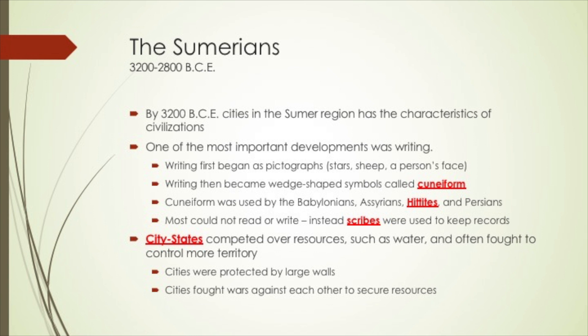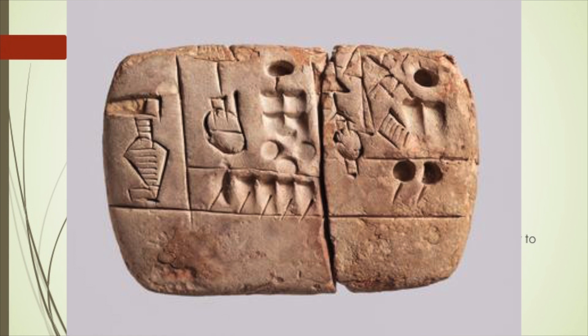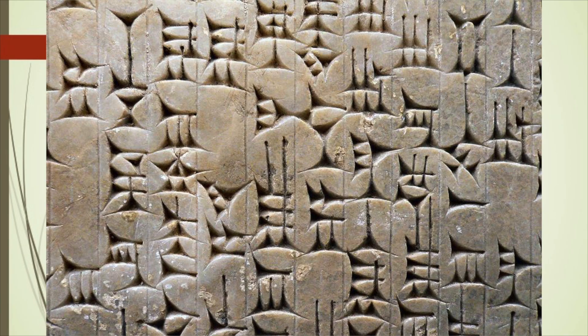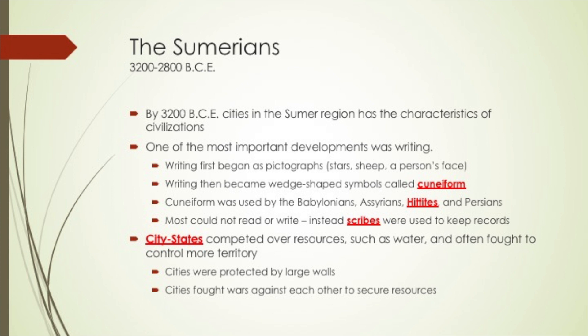One of the most important parts of Sumerian civilization was the development of writing. Writing first began as pictographs — pictures of stars, sheep, or a person's face — but they eventually evolved into symbols. The writing in this area was called cuneiform, from the Latin word 'cunus,' meaning wedge-shaped. It was a series of wedge symbols used to create their writing system, and it spread throughout the region and was used by the Babylonians, Assyrians, Hittites, and Persians.